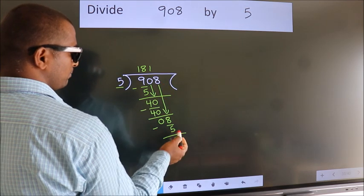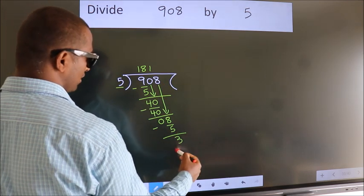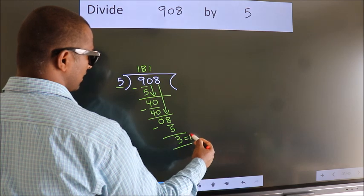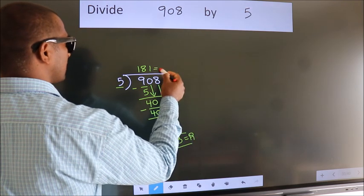No more numbers to bring it down. So, we stop here. This is our remainder. This is our quotient.